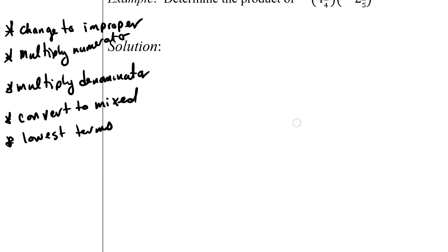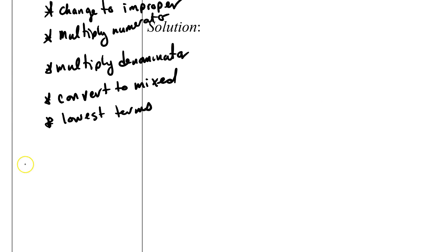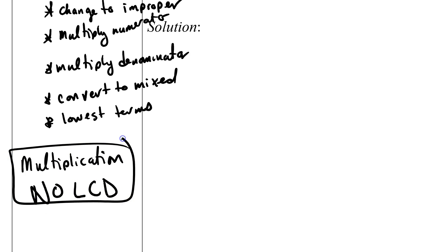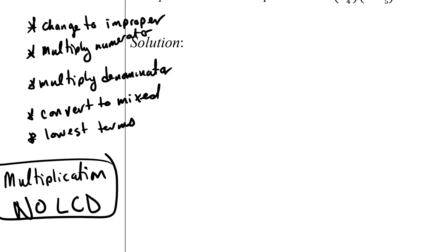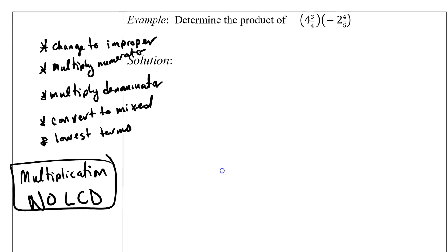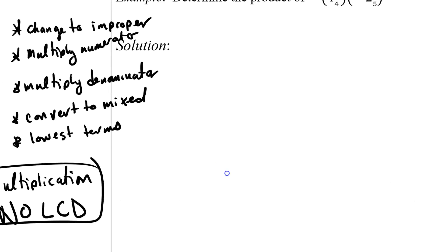With multiplication, there is no lowest common denominator. I see this all the time. People thinking, oh, whenever you do anything with fractions, you need a lowest common denominator. You don't. Because multiplying is actually the easiest. You just multiply the numerator, multiply the denominators together, and then make it into a form that is more simple.